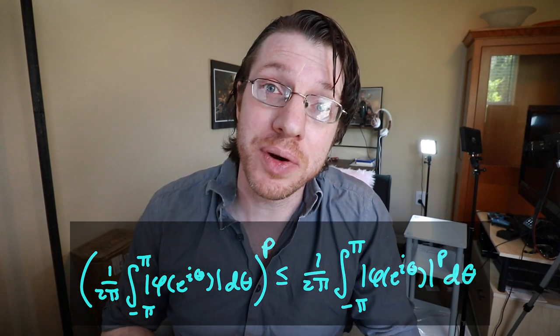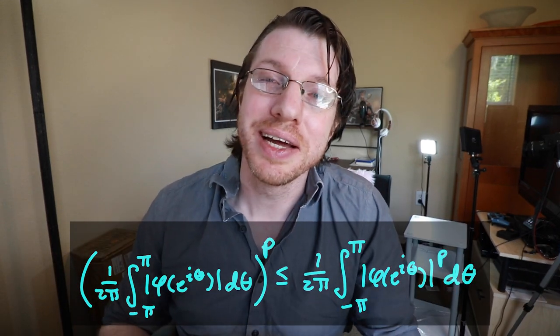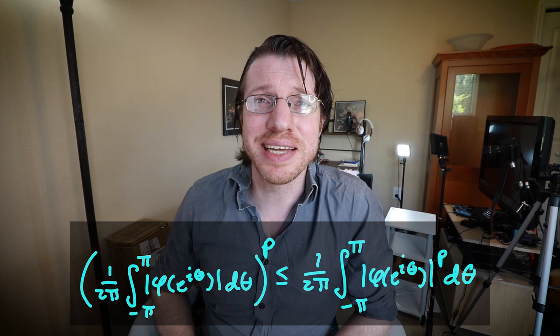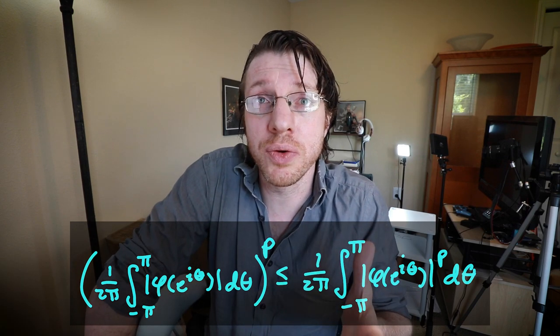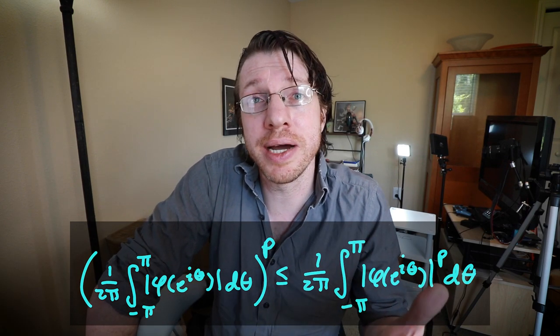And so there's a lot of good examples where you can get good use out of this. So for instance, if you want a convex function, well, X to the P is a convex function, provided that P is bigger than 1. And so if you have, say, an integral raised to the Pth power, and that happens more often than you think, you can actually move that inside. That's Jensen's inequality.